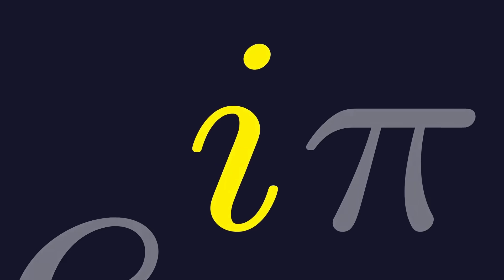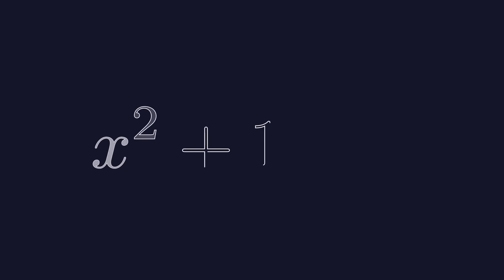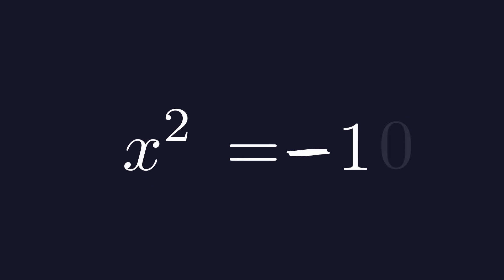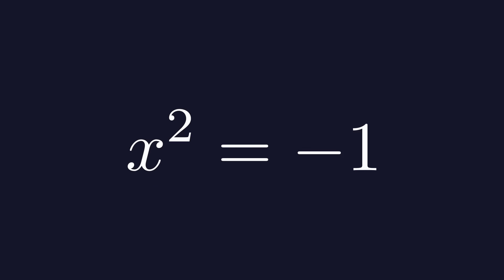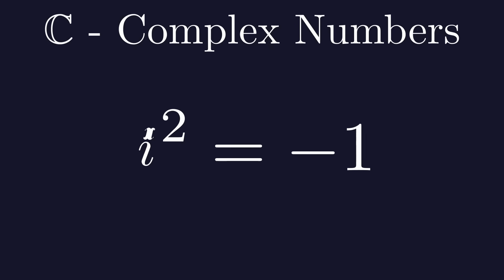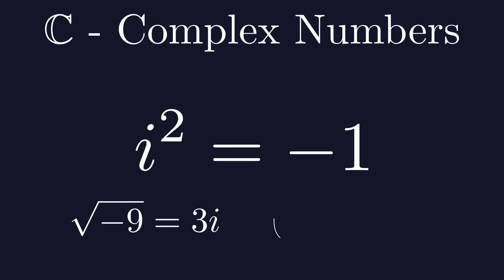Now let's talk about i. Consider the equation x squared plus 1 is equal to 0. If we rearrange it, we get x squared equal to minus 1. There is no real number that when squared gives a negative result. This is where the complex numbers come in. We define i as the number which when squared equals minus 1. With i, we can find square roots of other negative numbers. For example, the square root of minus 9 is 3i, because 3i squared is equal to minus 9.